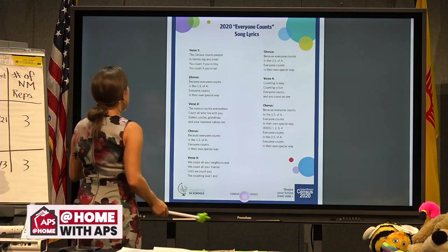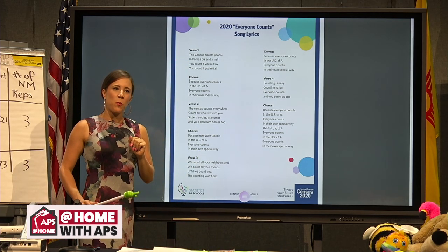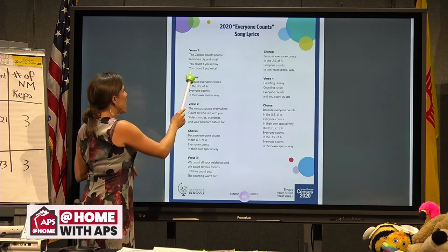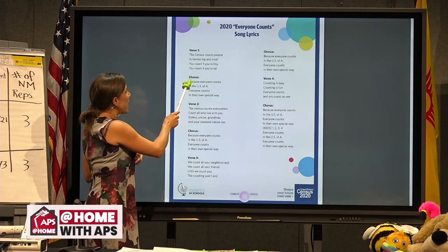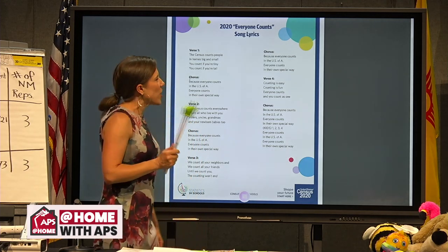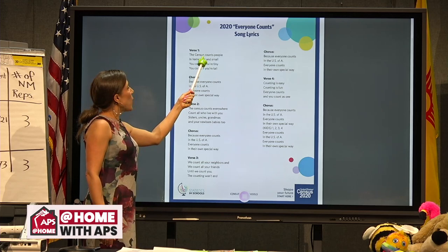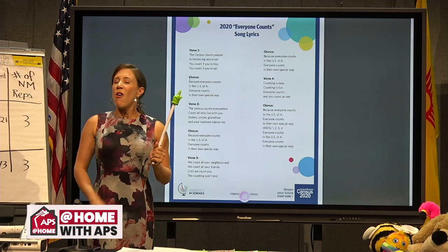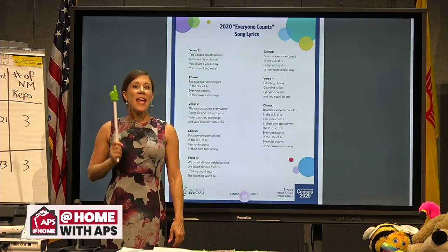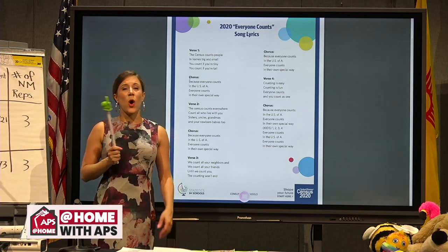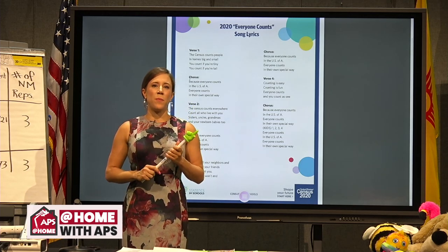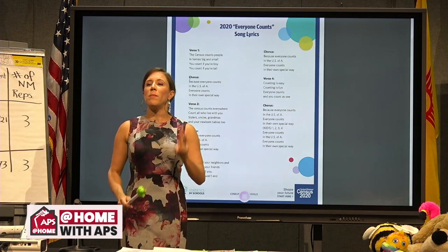What a cute song! Let's read just a couple of these verses so you can learn a little bit more. This word 'counts' means two different things. First, it means counting like one, two, three, four, because the census is used to count everybody in the United States. But it also means that you are special — you count, you matter, and your family is special and your family counts and your family matters.